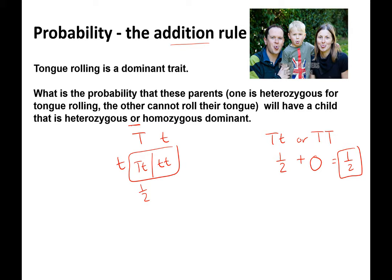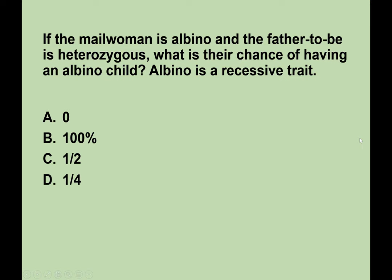A new problem: the mother is albino and the father-to-be is heterozygous. Albino is recessive, so we use capital A for normal and little a for albino. The albino mother is homozygous recessive (aa) and the heterozygous father is Aa. Setting up the Punnett square — what is their chance of having an albino child? Homozygous recessive is albino, so their chance is one half.